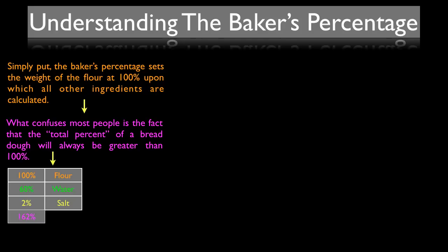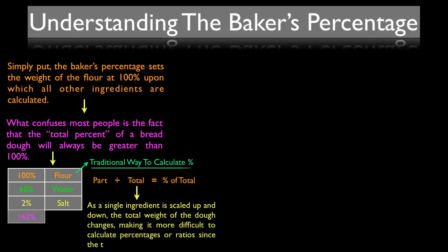The reason we use this method is because when talking about the traditional way of calculating percentage, you take a part of the whole and divide by the total to get the given percent of that part. The problem with this method for bread formulas is as you scale a single ingredient up and down, the total weight of the dough changes, making it more difficult to calculate percentages since the total weight is a moving target.